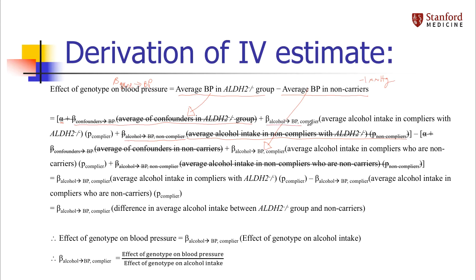Notice that everything else is the same when we look at the non-carrier group — lots of things are going to cancel. The intercepts cancel. We've assumed that confounders are completely balanced in the two genotype groups, so everything to do with confounding cancels. We've also assumed that compliers and non-compliers are balanced in both genotype groups, as is the average alcohol intake due to factors other than genotype. So all of these things related to non-compliers and alcohol also cancel.